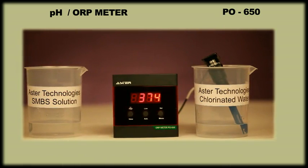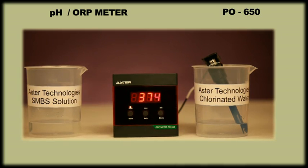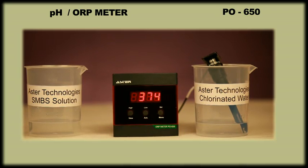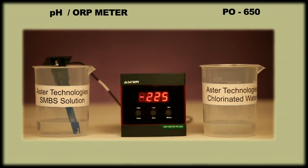Whereas, an ORP meter is used to measure the oxidation reduction potential. In the water and waste water treatment industry, chlorine and ozone are the most common disinfectants used. The ORP meter monitors the level of residual chlorine or ozone in water.